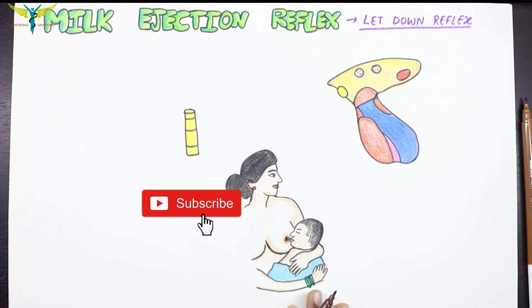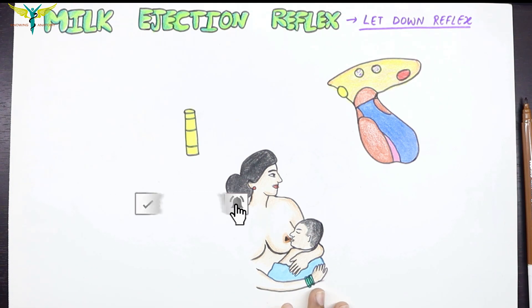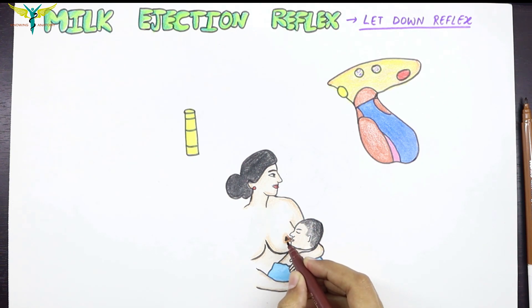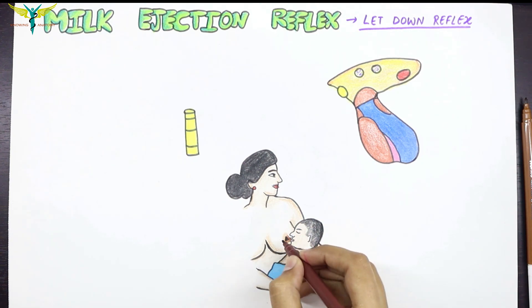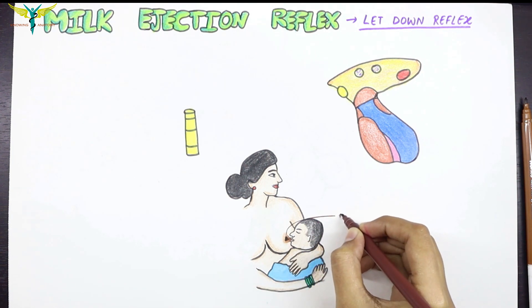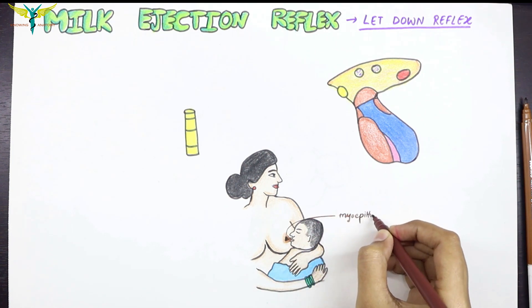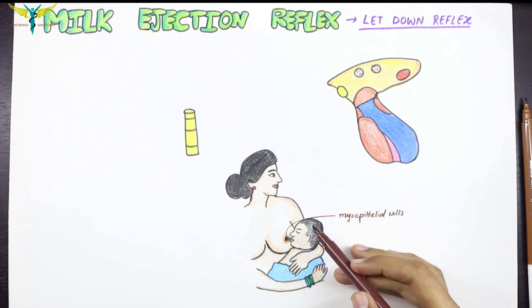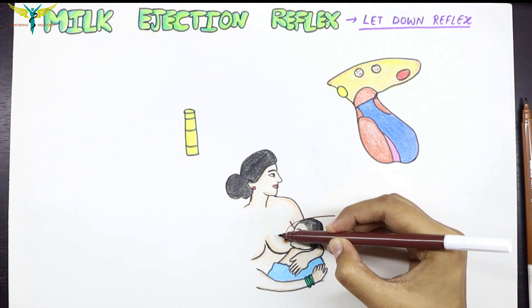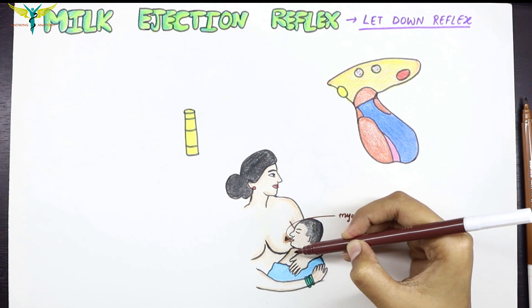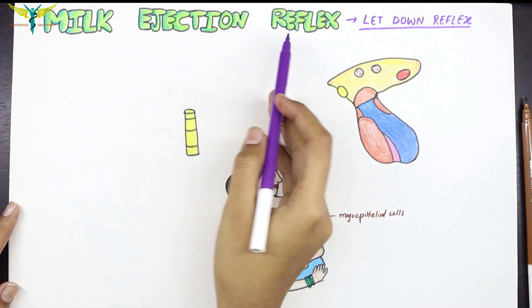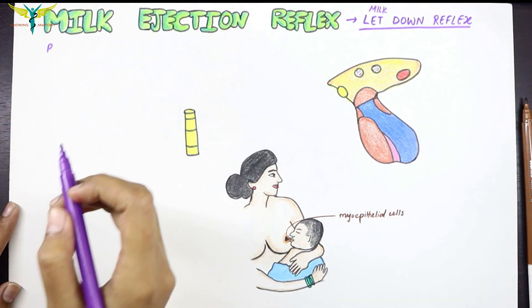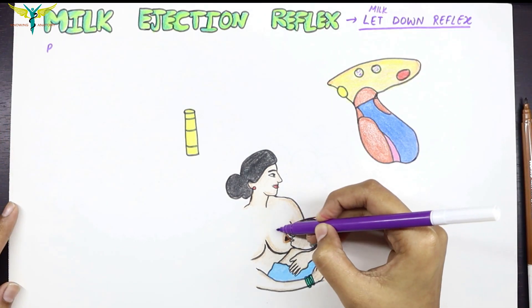The main hormone causing this reflex is oxytocin. Oxytocin causes the ejection of milk from the mammary glands. The ducts of the mammary glands are lined by the myoepithelial cells. Oxytocin causes the contraction of these myoepithelial cells, and the flow of milk from the alveoli of the mammary gland comes out through the duct system and the nipple. So the milk ejection reflex is the process by which milk is ejected from the alveoli of the mammary gland.